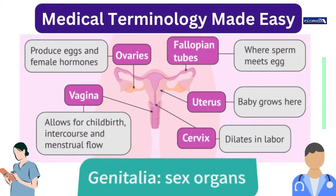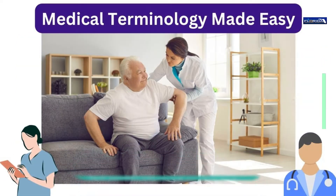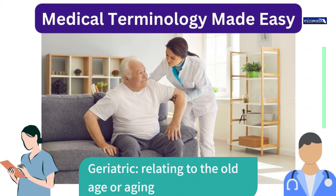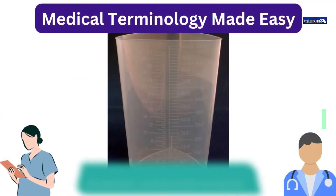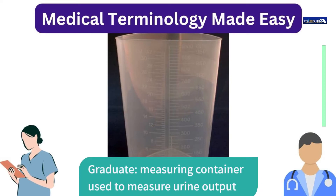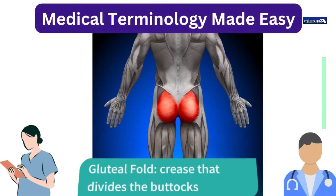Genitalia: sex organs. Geriatric: relating to old age or aging. Geri chair: recliner type of chair with wheels. Graduate: measuring container used to measure urine output. Gluteal fold: crease that divides the buttocks.